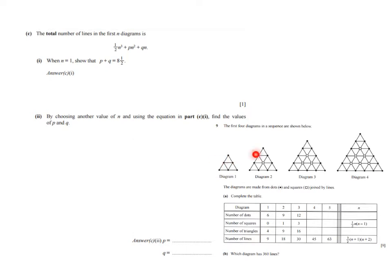So all the lines added together in n diagrams. So if n would be 3, then it's all the lines of diagram 1 plus all the lines in diagram 2 plus all the lines in diagram 3. Then they say, well, when n is 1, show that p plus q equals 8.5.